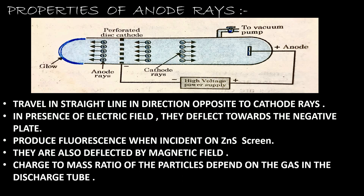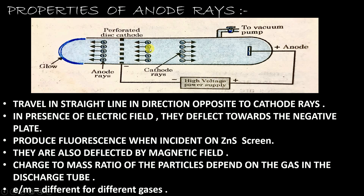The fifth property is that the charge-to-mass ratio of the particles depends on the gas in the discharge tube. Simply put, the anode rays depend on the gas taken in this tube. If you have fluorine gas, the anode rays will be different; if you have chlorine gas, they will be different; if you have hydrogen gas, they will be different. They completely depend on the gas present in the tube.